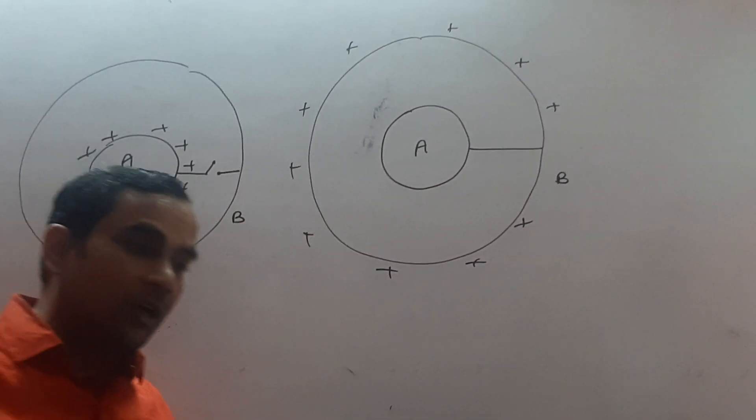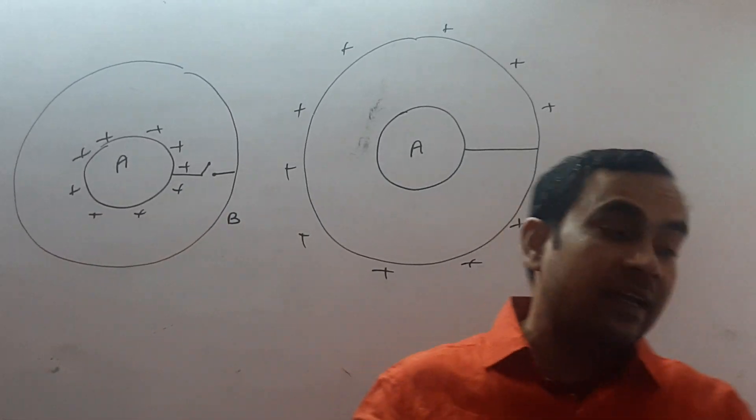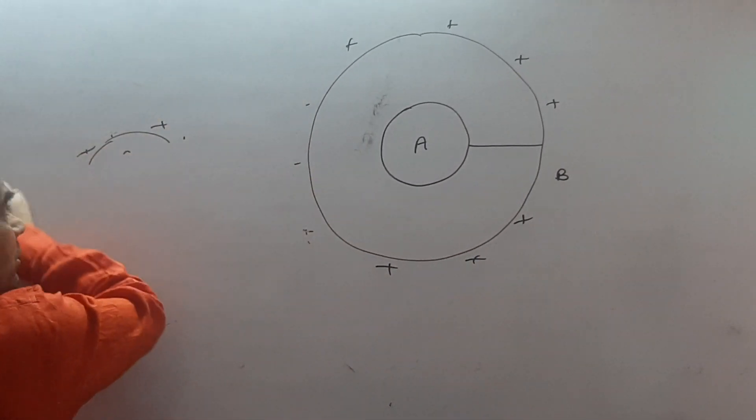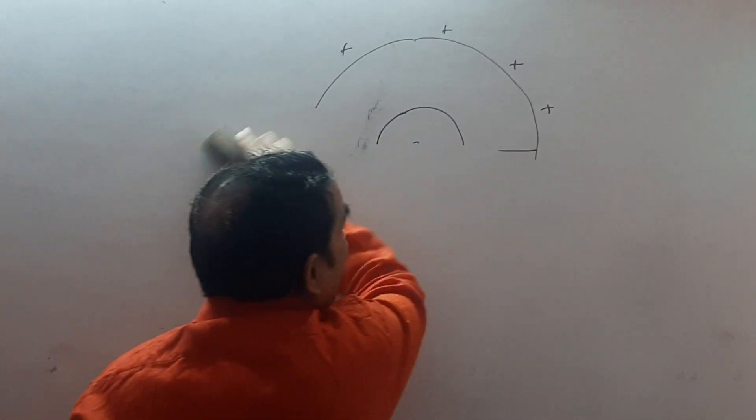Next question. Calculate total number of electrons linked with 1 Coulomb charge. Calculate total number of electrons associated with 1 Coulomb charge.